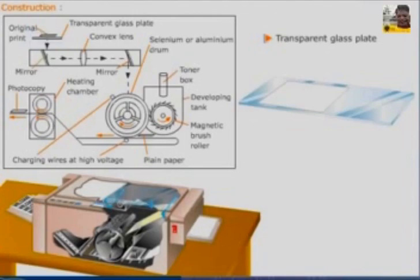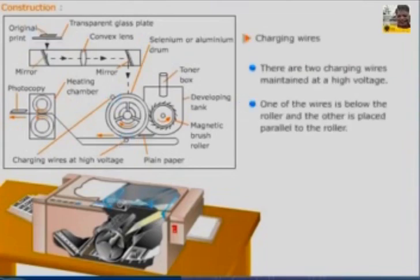There are two charging wires maintained at high voltage. One of the wires is fixed below the roller and the other is placed parallel to the roller.